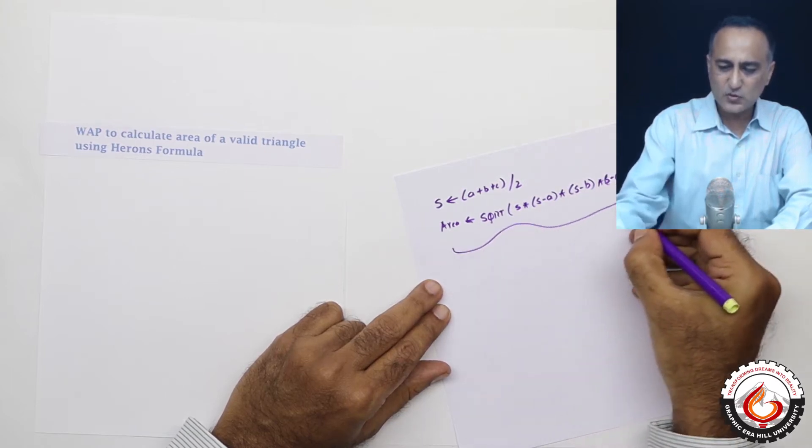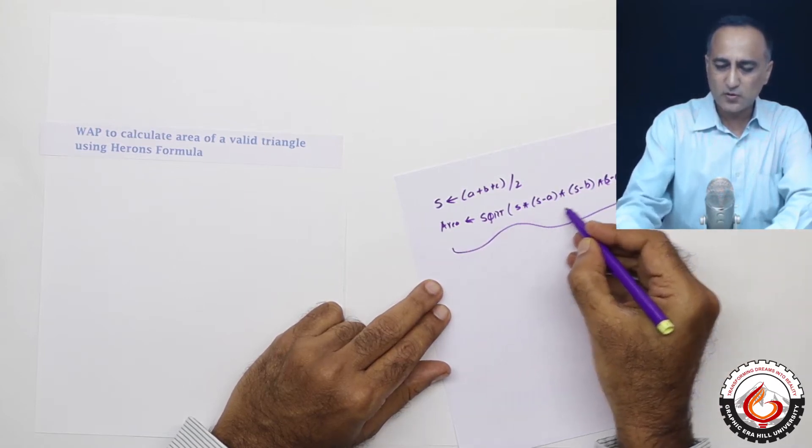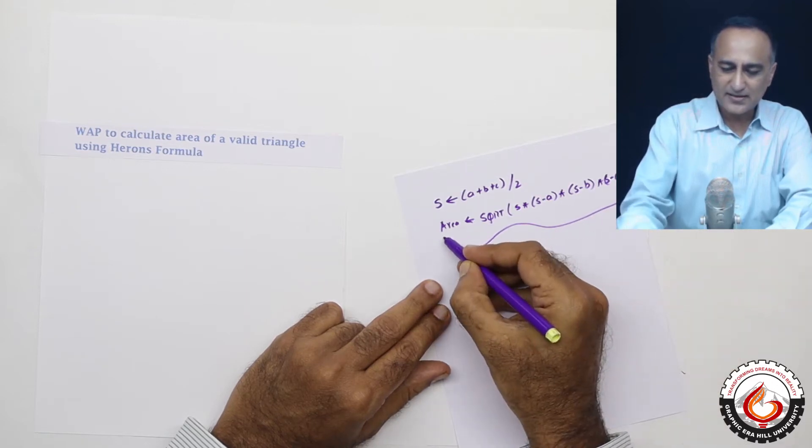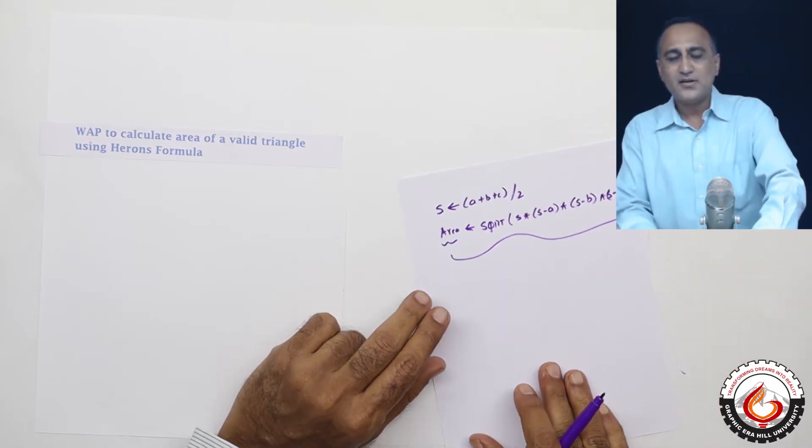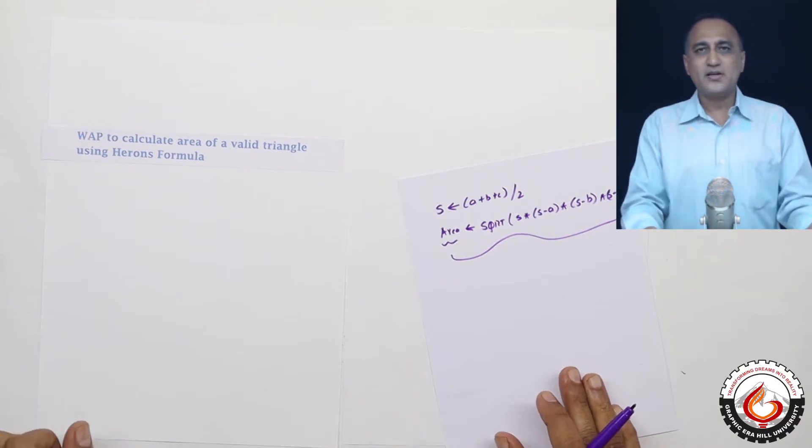This gives you the square root of on the right hand side and that's how you get the area of a valid triangle based upon Heron's formula.